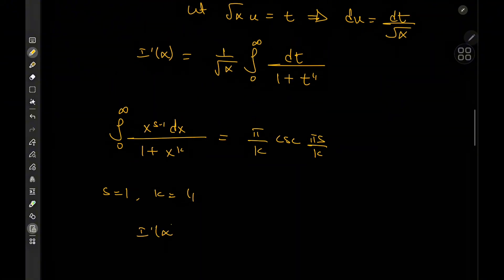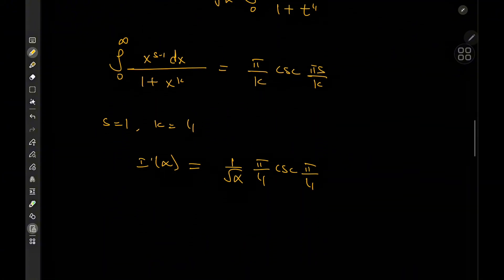Now s here is clearly equal to one and k here is equal to four. So that means I prime of alpha is 1 over root alpha times pi over 4 times the cosecant of pi over 4. And cosecant of pi over 4 would be root 2, if I'm not wrong. So that means we have pi over 4 times root 2 over alpha. Okay, cool. So that's I prime completely in terms of the alpha parameter.